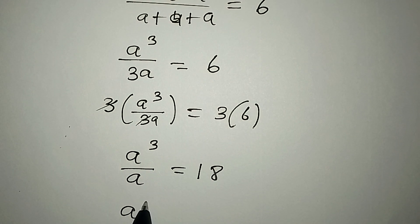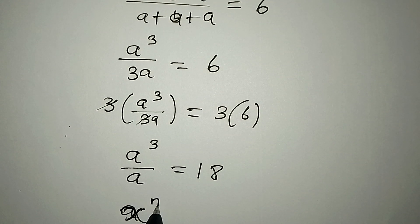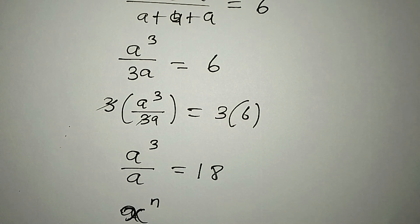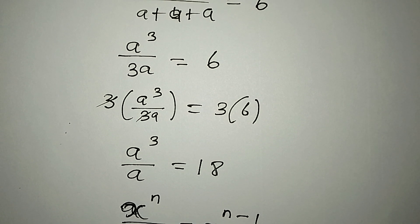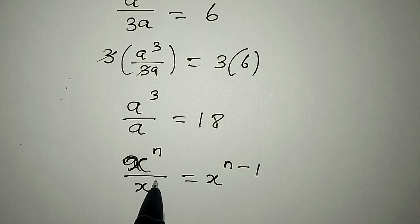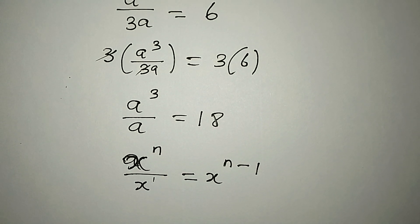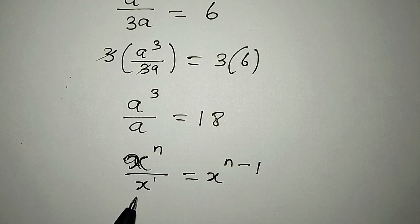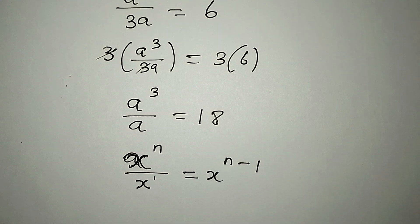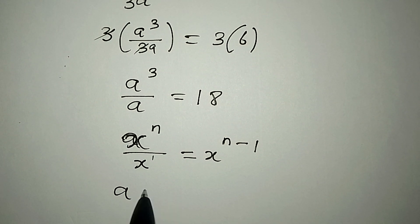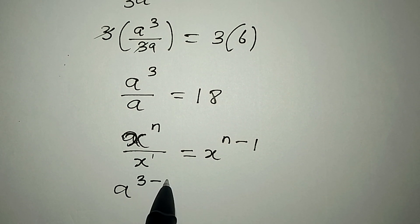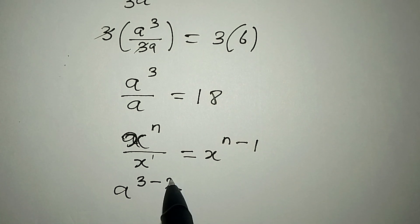Now we apply the exponent rule: x to the power of n over x is the same as x to the power of n minus 1. This is because there is an invisible exponent of 1 on the denominator — you pick one of the bases and subtract the powers. So we apply this to a³ over a, giving 3 minus 1.